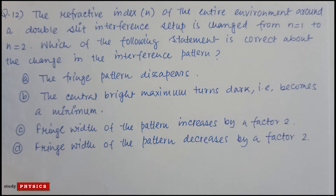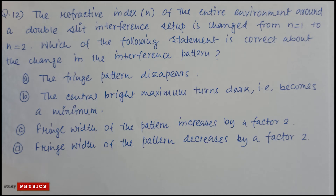Question 12: The refractive index n of the entire environment around a double-slit interference setup is changed from n equal to 1 to n equal to 2. Which of the following statements is correct about the change in the interference pattern? Options include: fringe pattern disappears, central bright maximum turns dark, fringe width increases by a factor 2, or fringe width decreases by a factor 2.